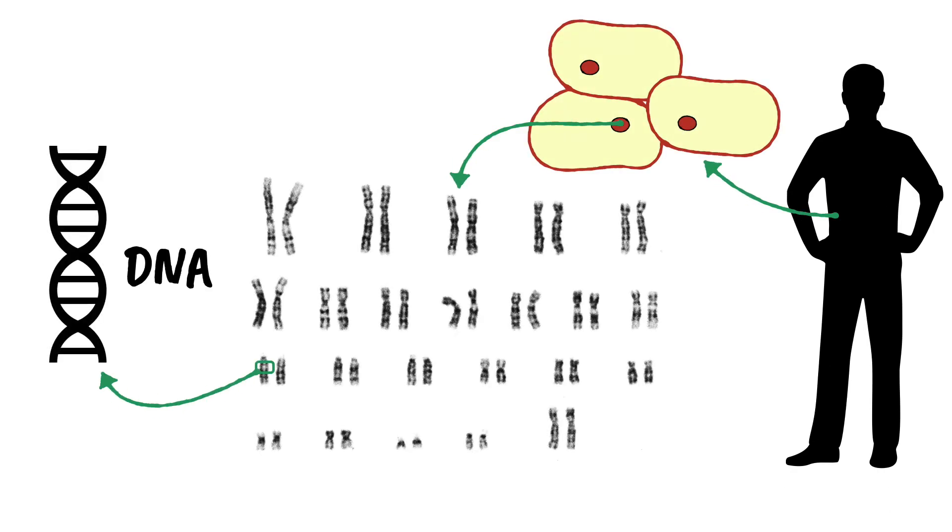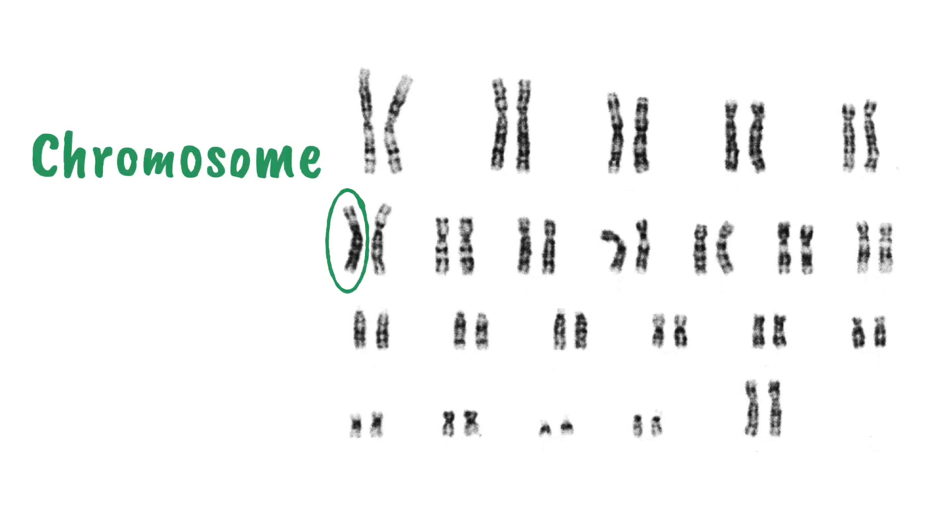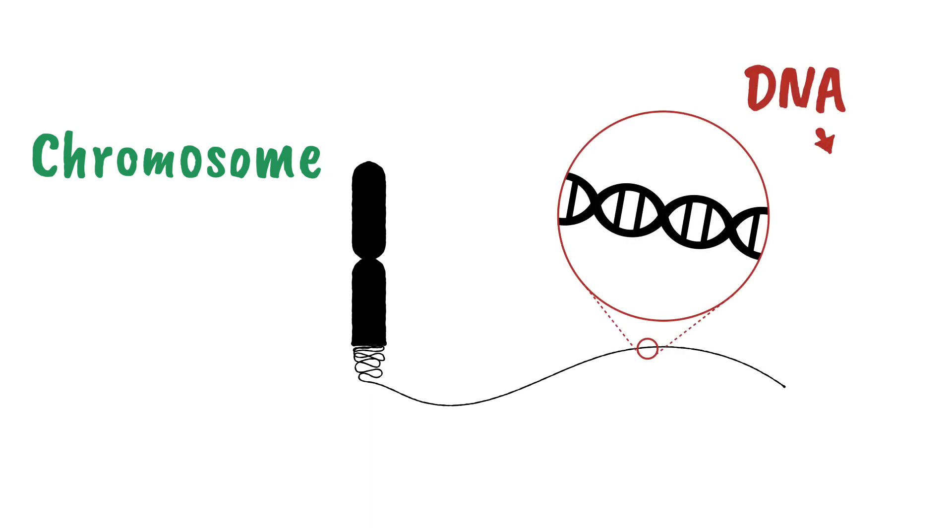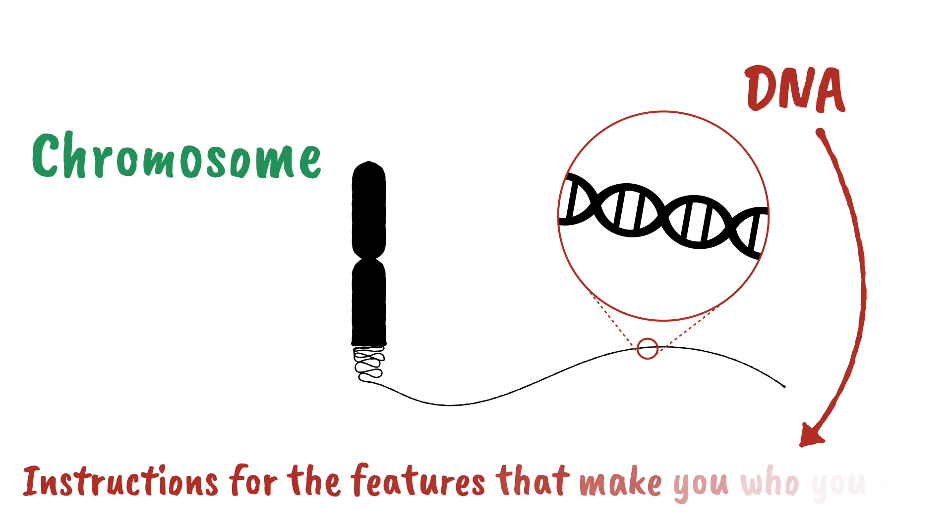Cells contain DNA. DNA is arranged on chromosomes. If we unravel a chromosome, it is basically just a long string of DNA which contains instructions for the features that make you who you are.